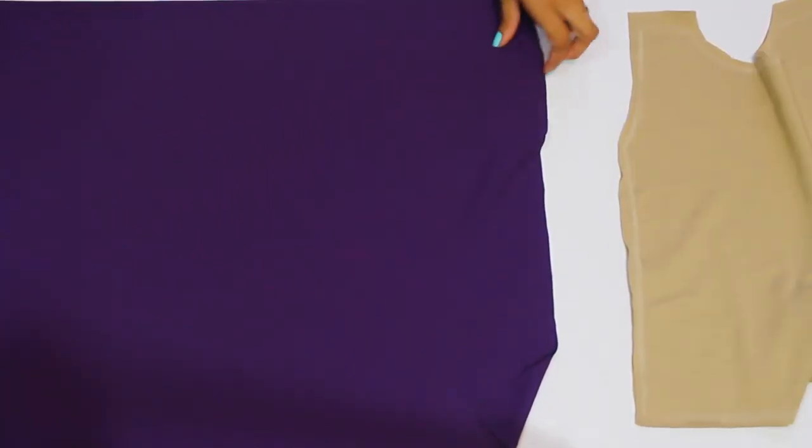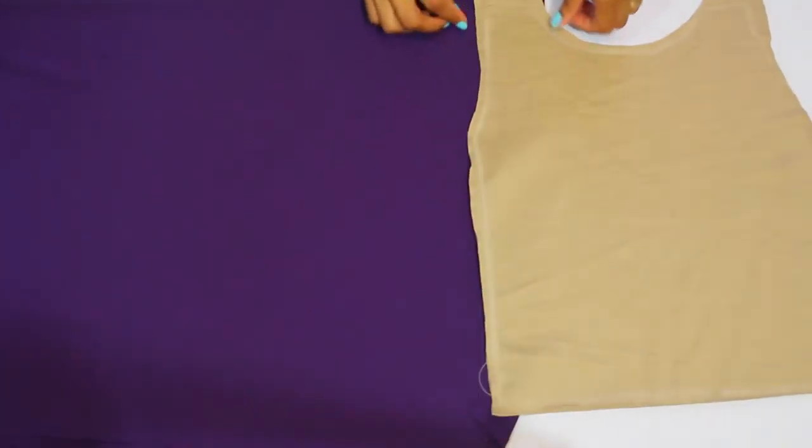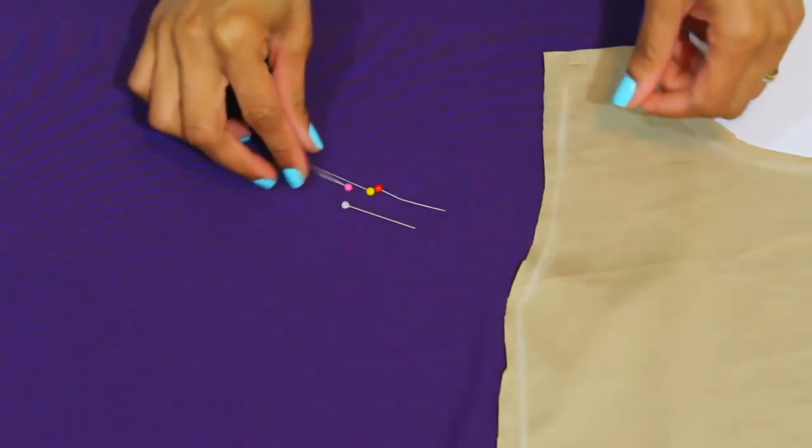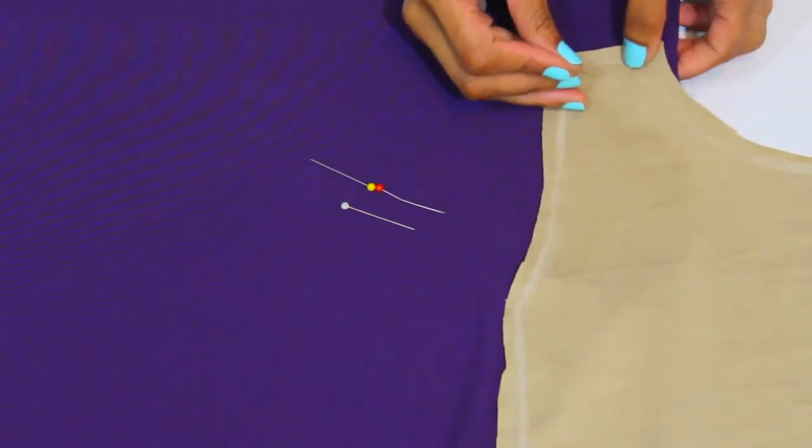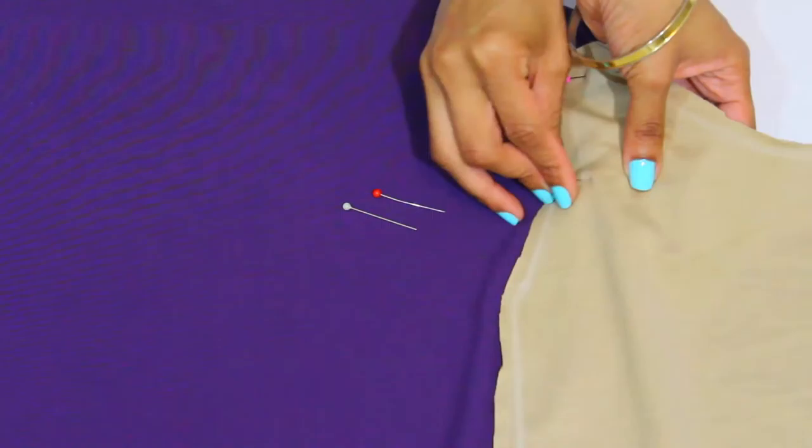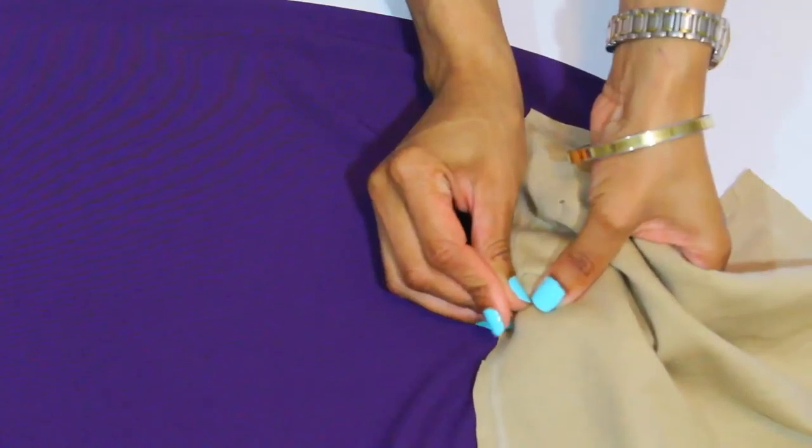So grab your extra fabric or the fabric that you're going to be using to sew on your top or bodice. Now lay the top on top of your fabric for the sleeve and you're actually going to want to pin your top down to your fabric, or if you're using a pattern paper, just pin it down to that so it does not move.